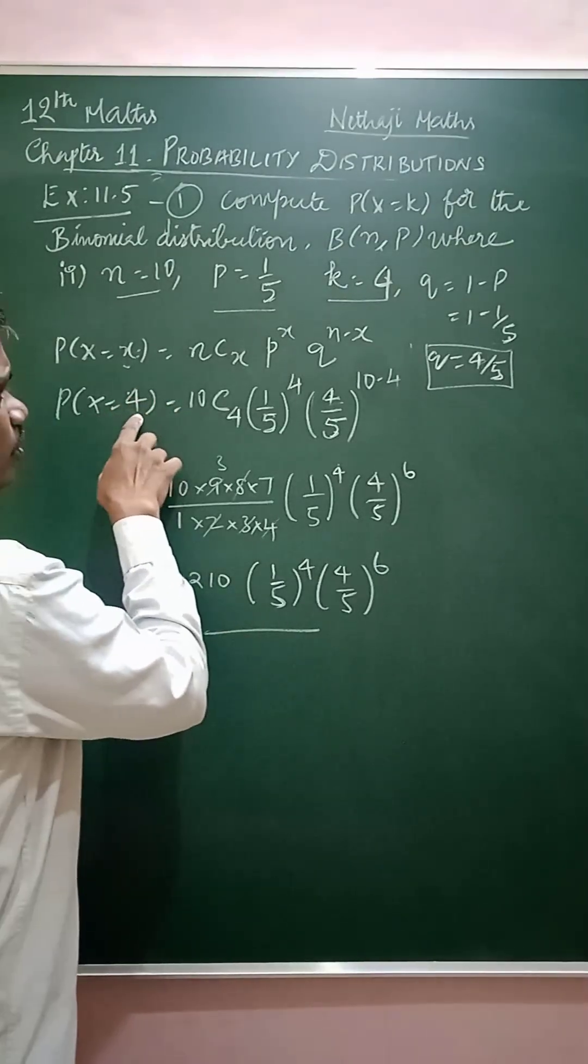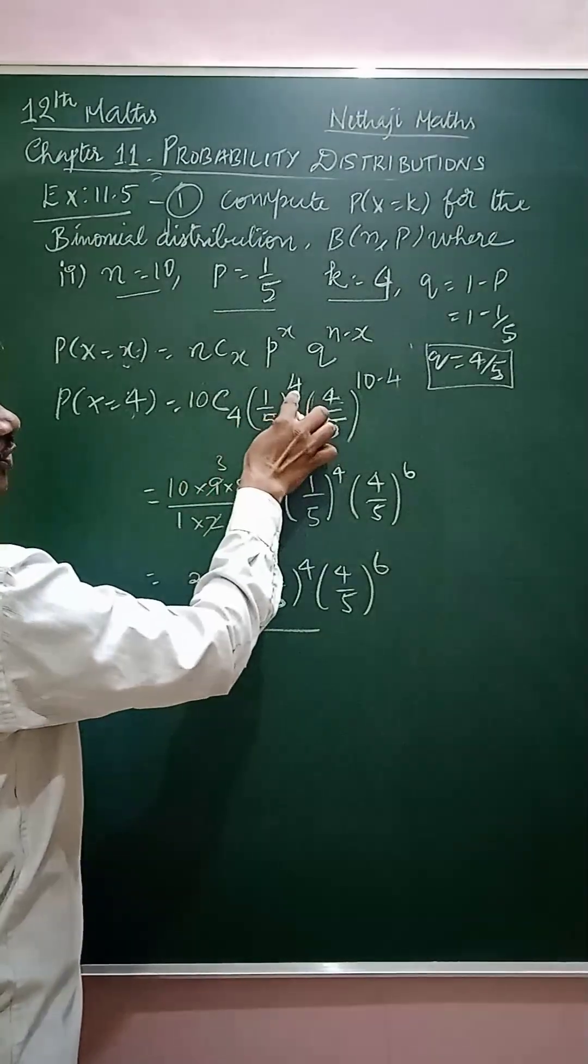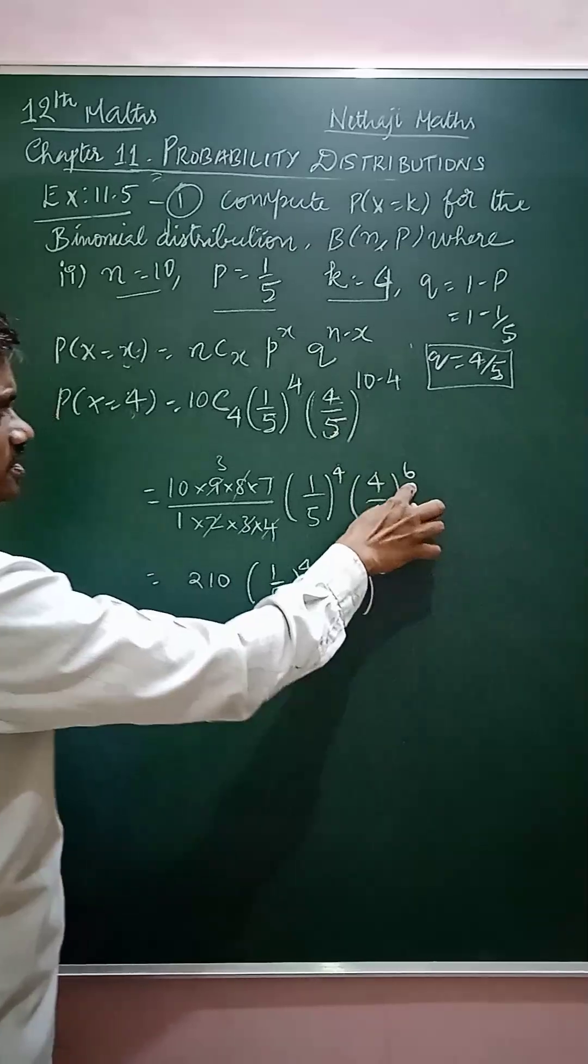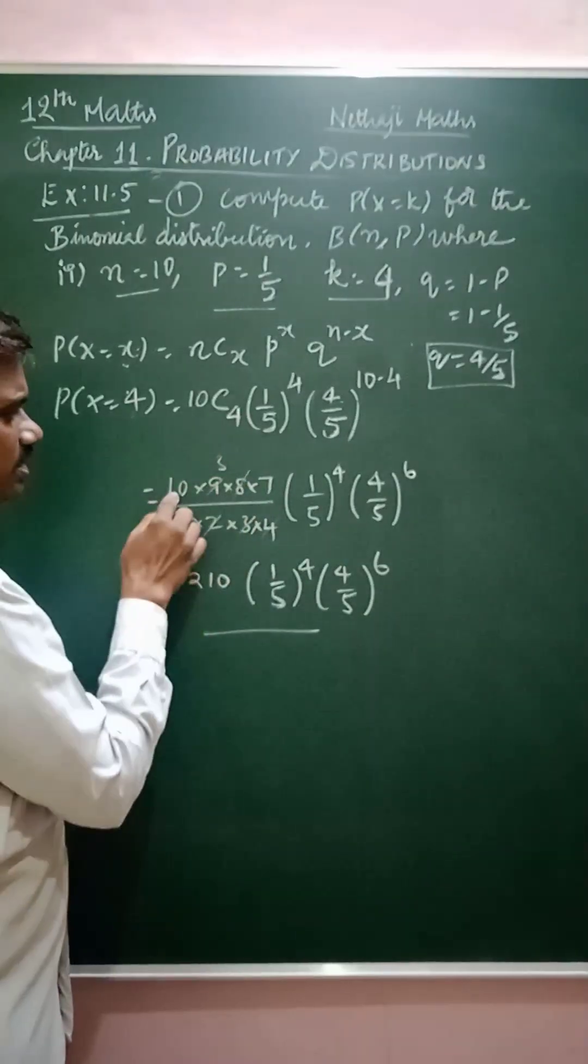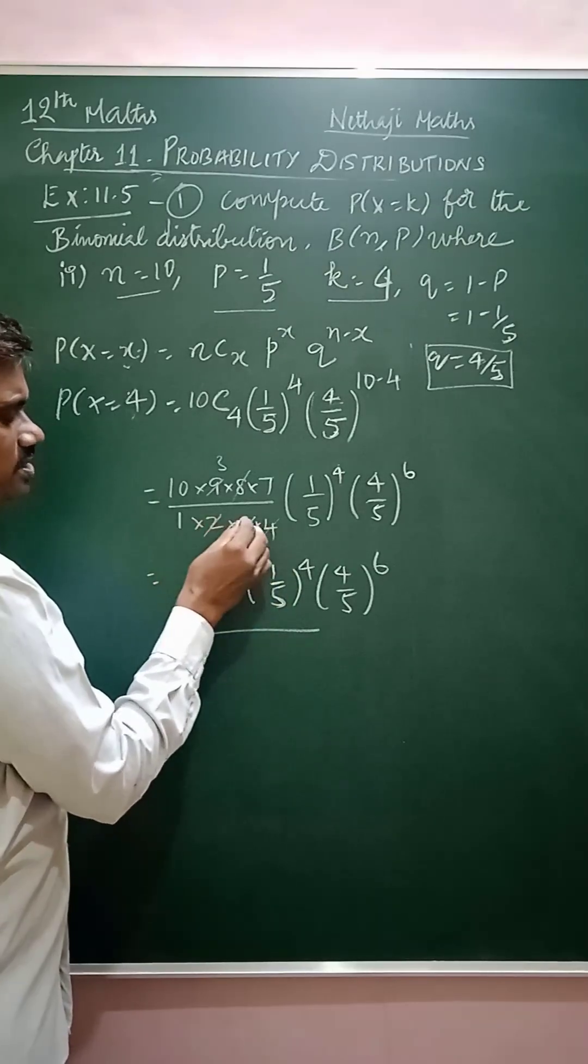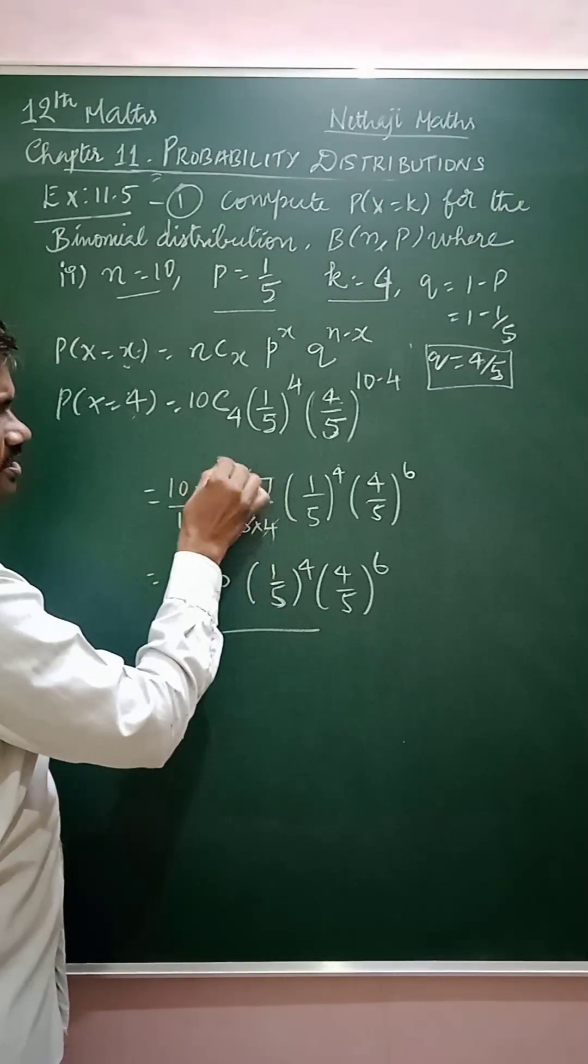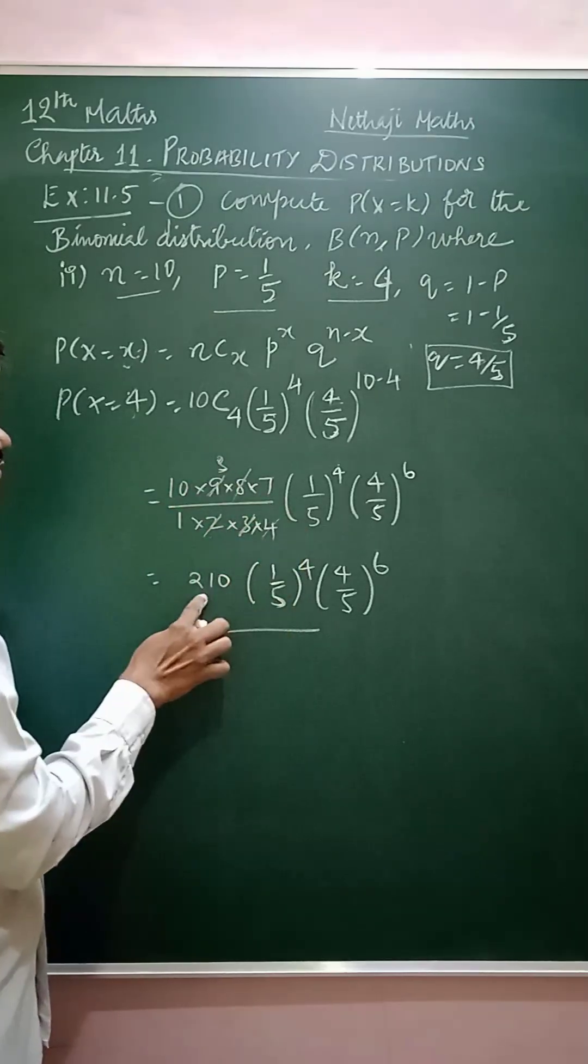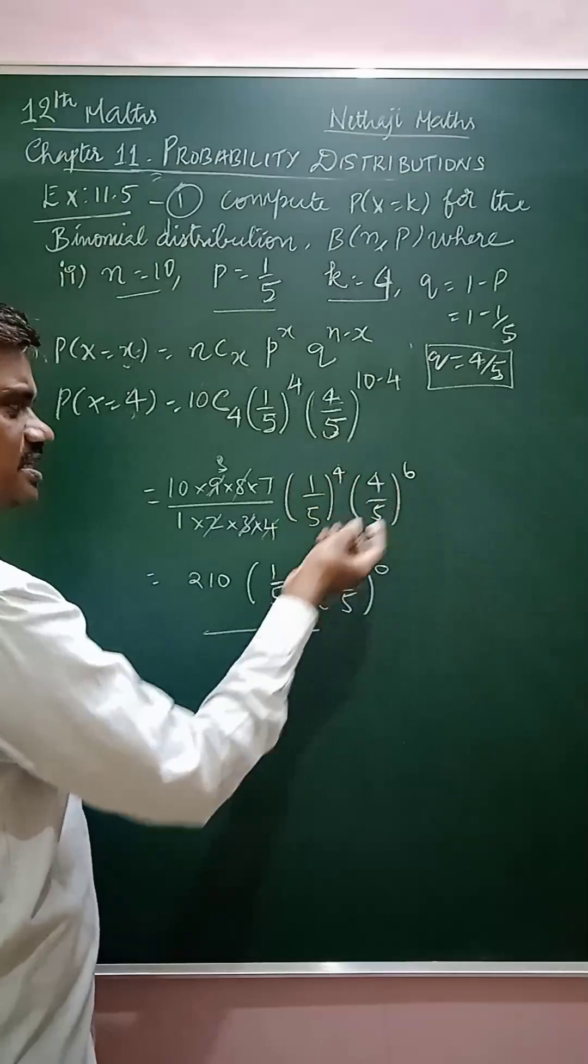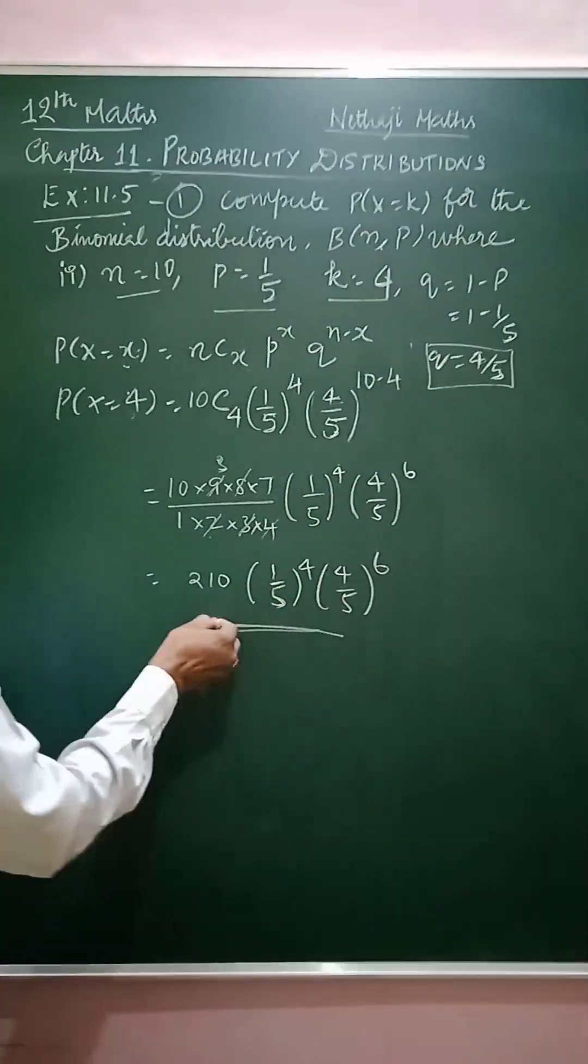Using the same formula with x equals 4, n equals 10, we get 10C4 times (1/5)^4 times (4/5)^6. Now 10C4 equals (10×9×8×7)/(1×2×3×4) equals 210. So the answer is 210 times (1/5)^4 times (4/5)^6.